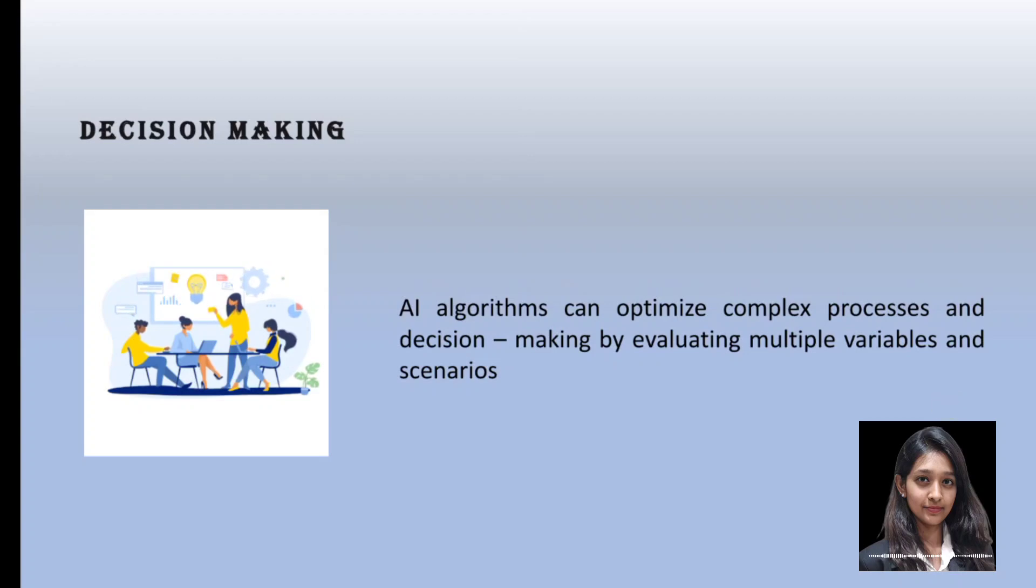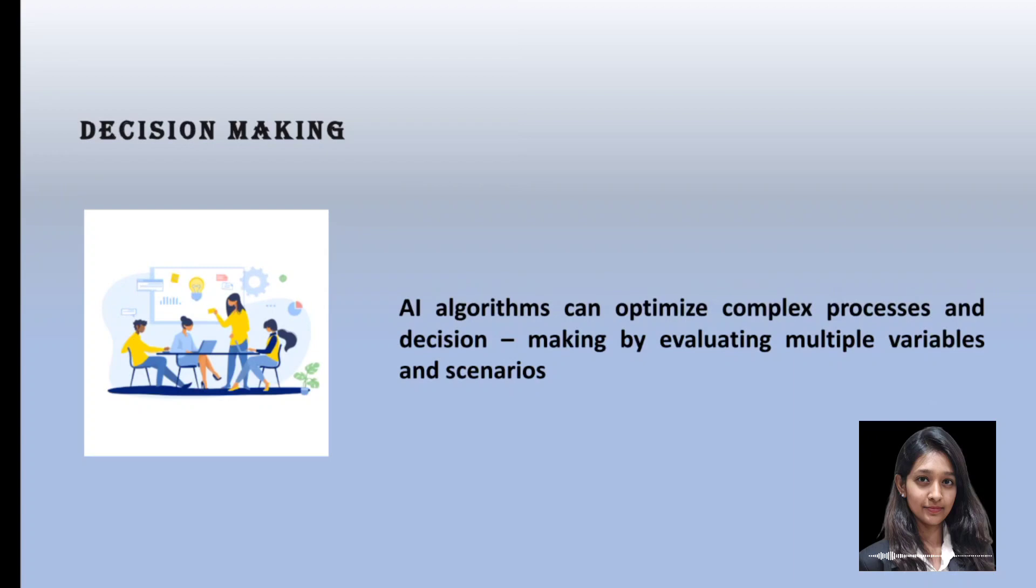The next one is decision making. In AI, decision making involves the use of algorithms, models, and data-driven processes to make choices or take actions in a manner that optimizes certain objectives or criteria.